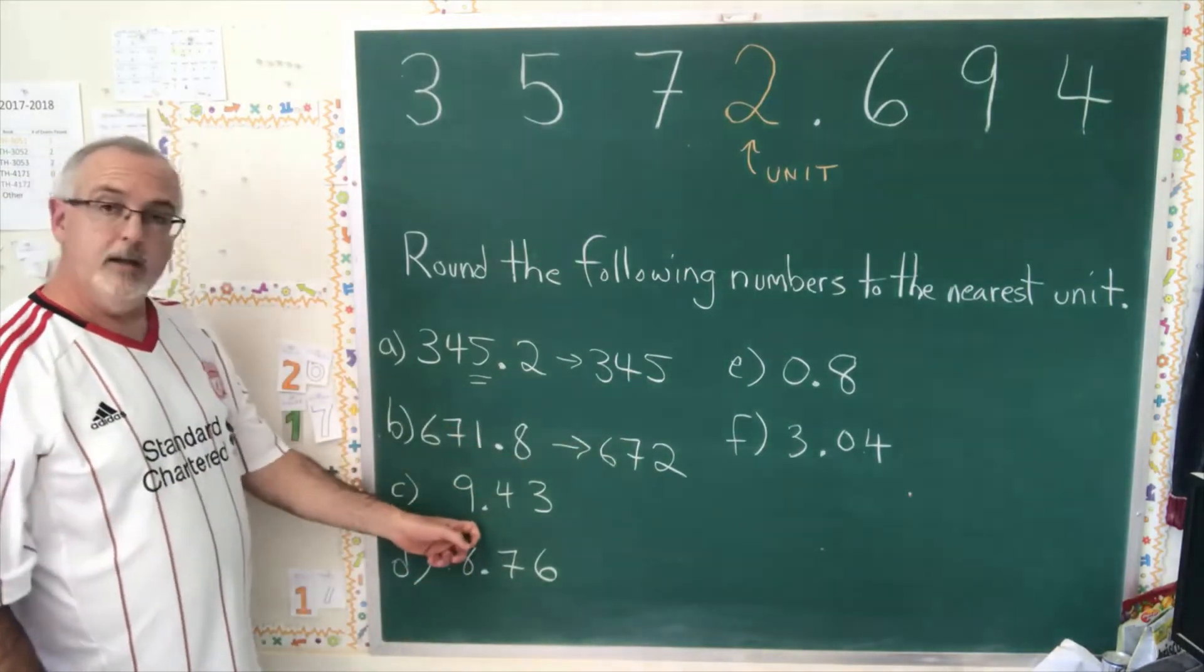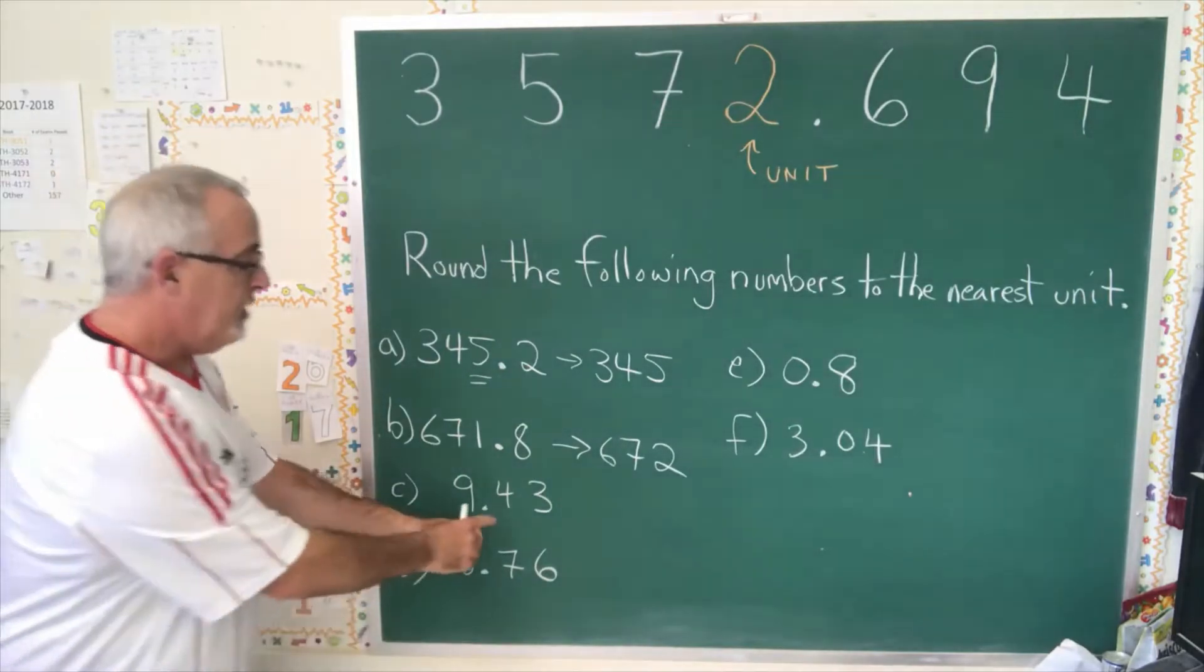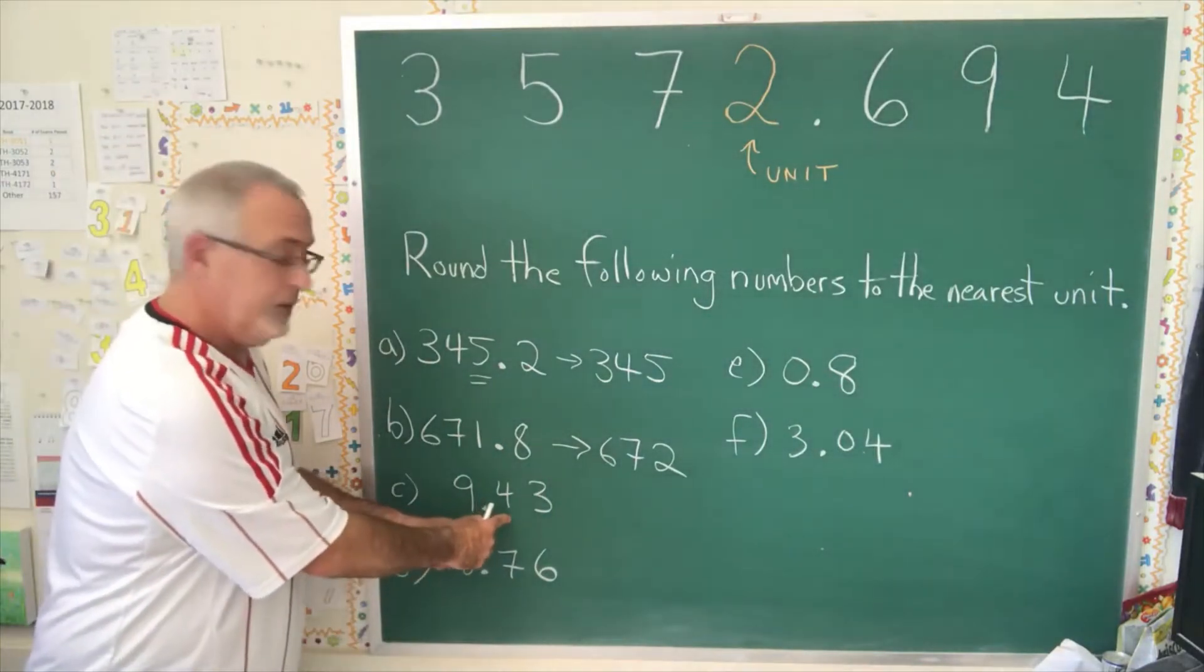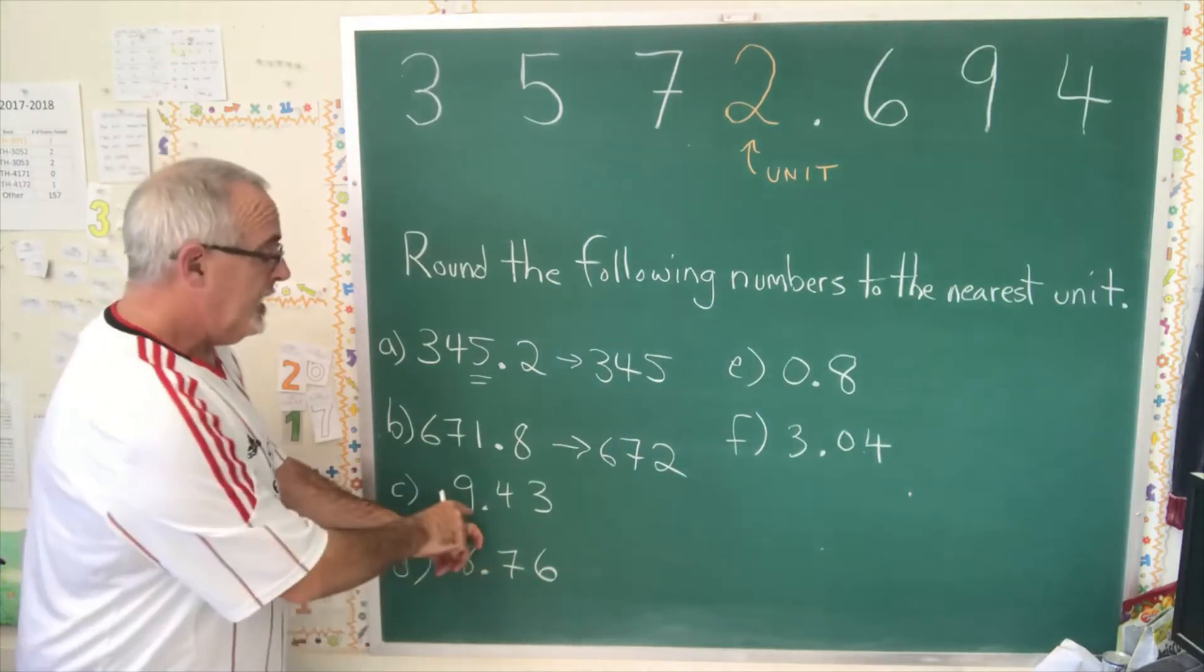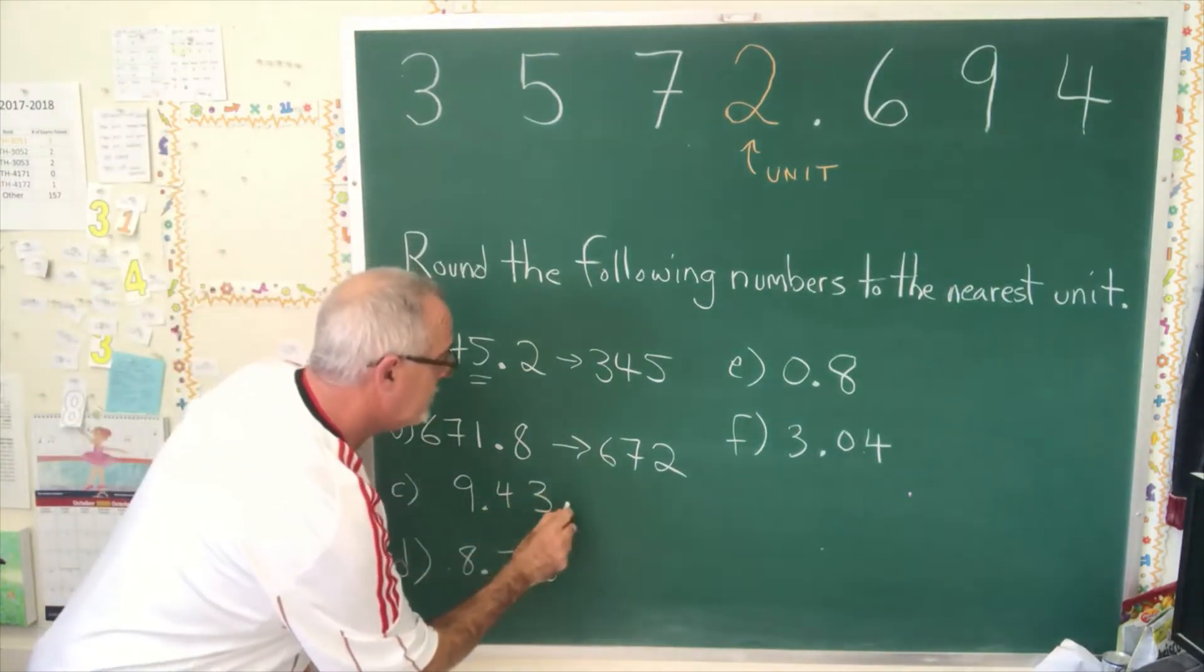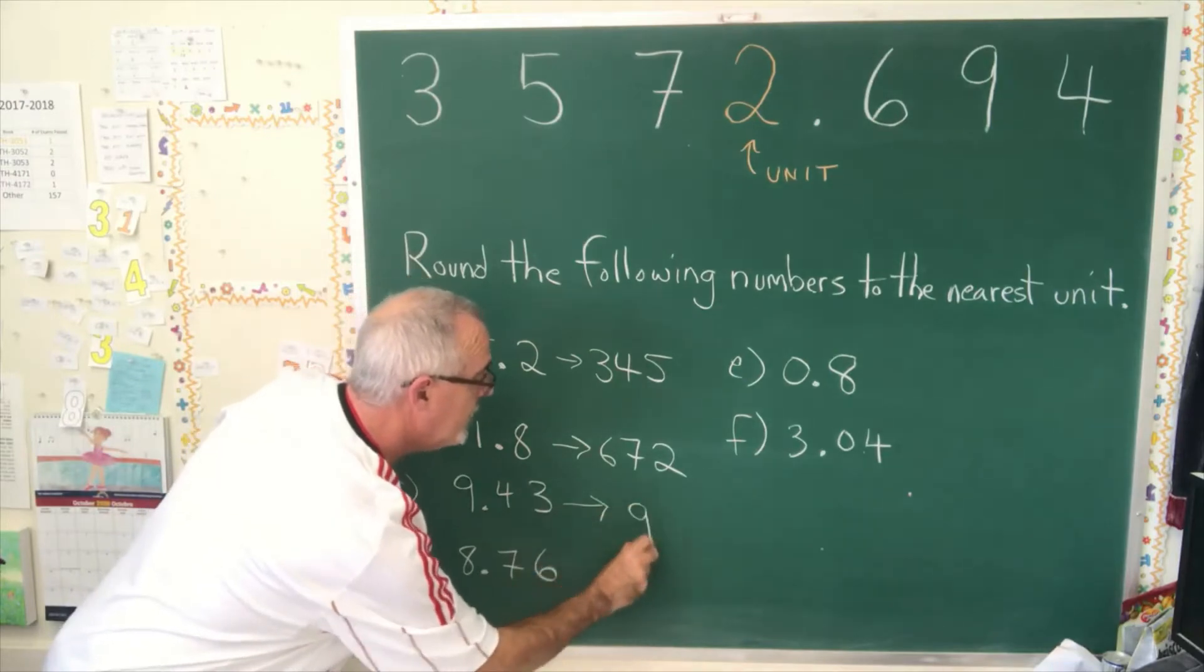9.43, the 9 is in the unit's position. The number after it in the 10th position is less than 5. So therefore, rounded to the nearest unit, this is 9.